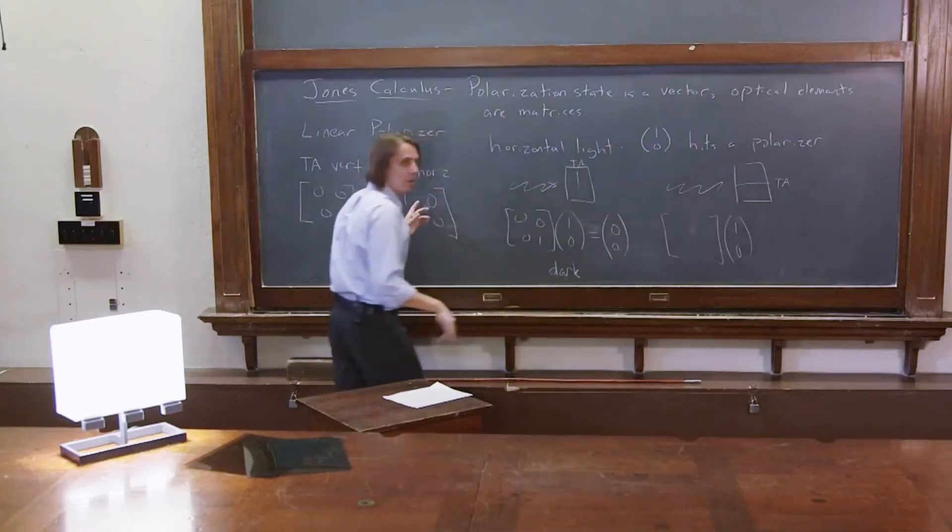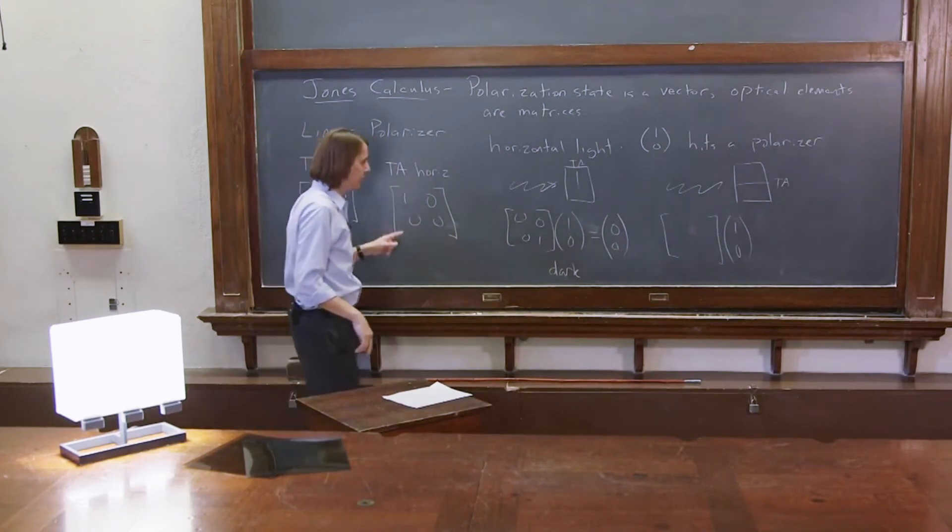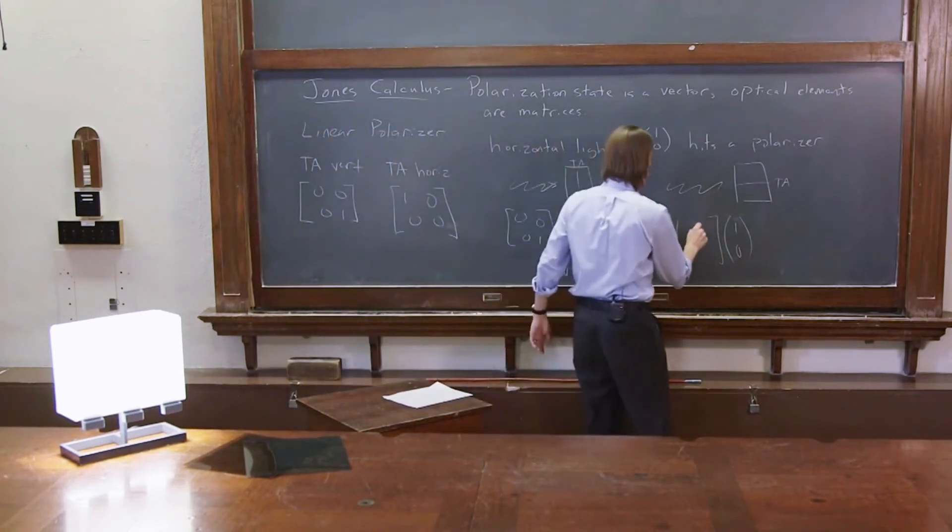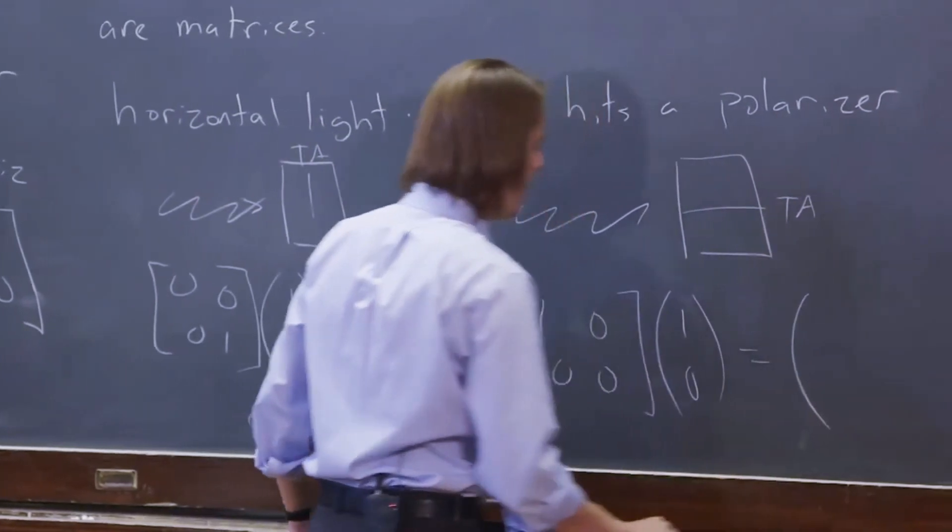Now the matrix, the horizontal matrix, is 1, 0, 0, 0. What kind of light does that give you?